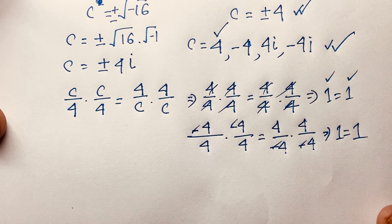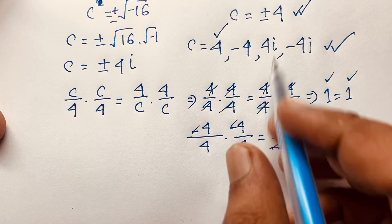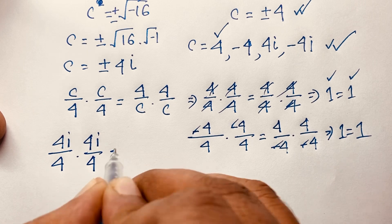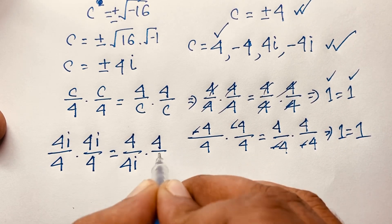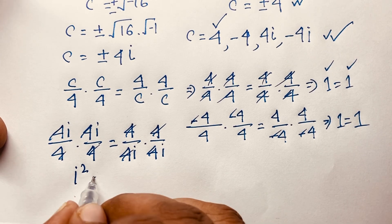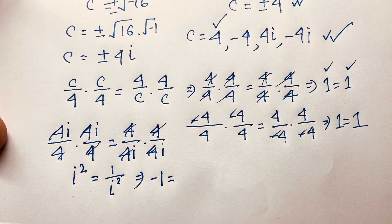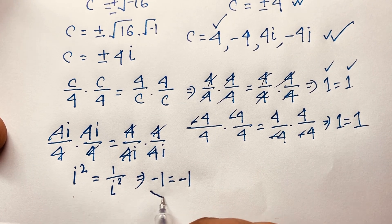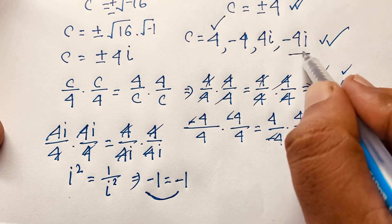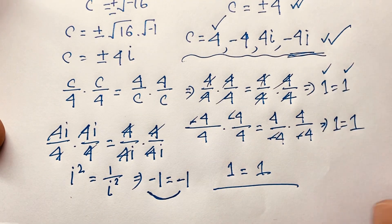If c equals positive 4i or negative 4i, substituting in we get 4i over 4 times 4i over 4 equals 4 over 4i times 4 over 4i. After cancellation, the left-hand side gives i squared and the right-hand side gives 1 over i squared. Since i squared equals negative 1, and 1 over negative 1 also equals negative 1, left-hand side equals right-hand side. So all four roots — positive 4, negative 4, positive 4i, and negative 4i — are valid answers.